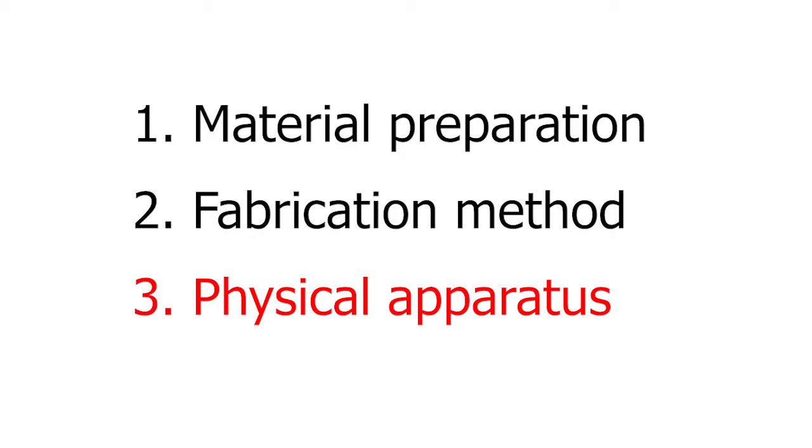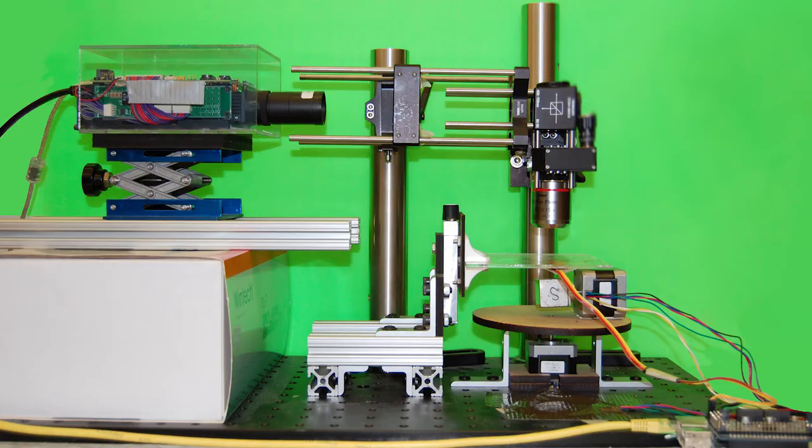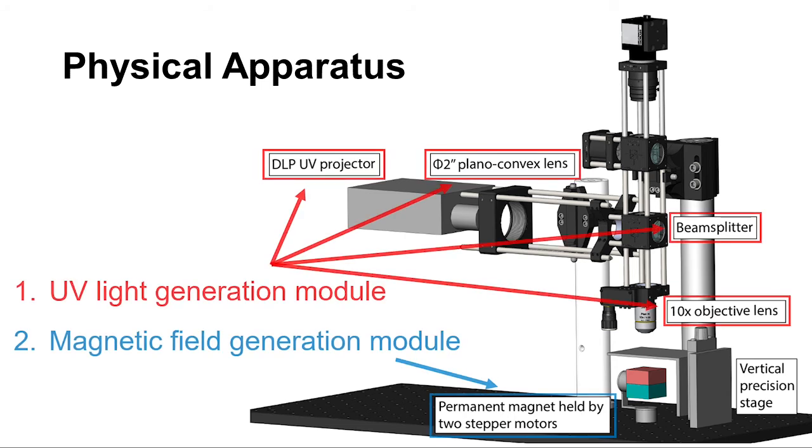Physical apparatus: This is a prototype that we designed to pattern the magnetic particles using UV light. The system comprises two parts, the UV light generation module and the magnetic field generation module.